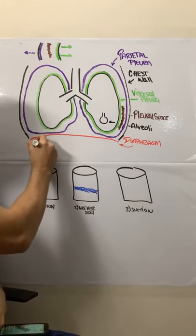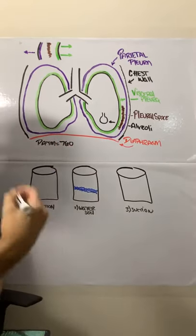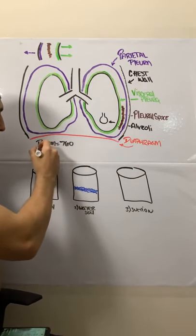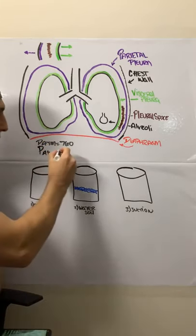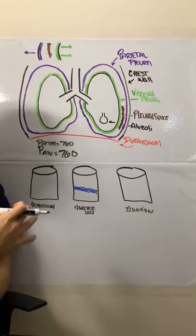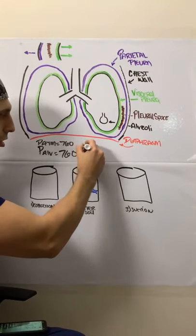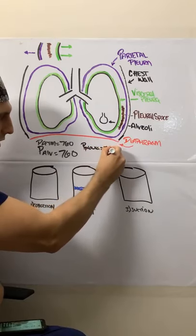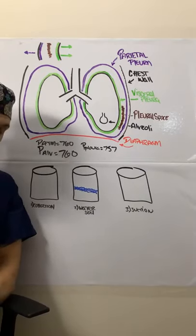So the first thing we need to know is that the pressure of the atmosphere is 760 millimeters of mercury, which hopefully a lot of people remember. The next thing we need to remember is that the pressure of the alveoli when we're not moving any air is also 760. And the reason is that there's no valve between the atmosphere and your lungs. If you're not moving any air, you just sit there, don't breathe in or out. So they should be the same.